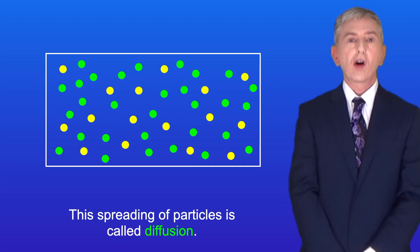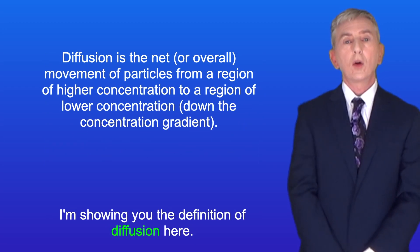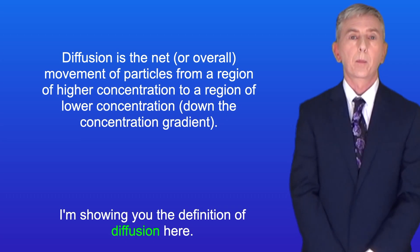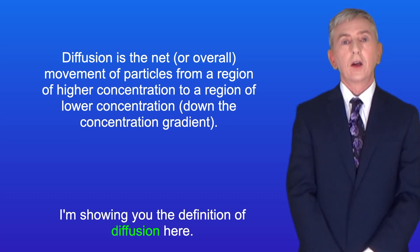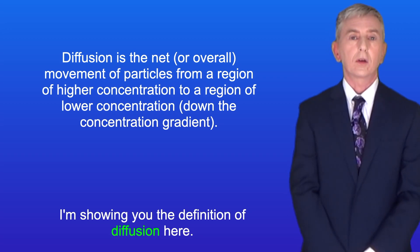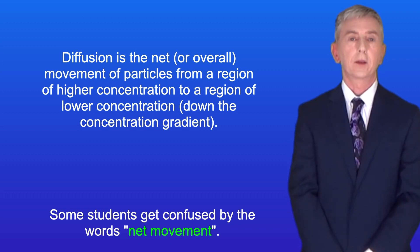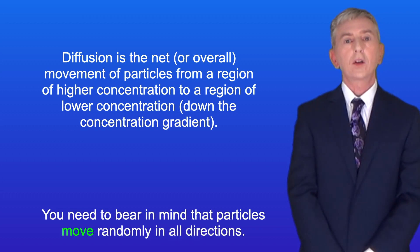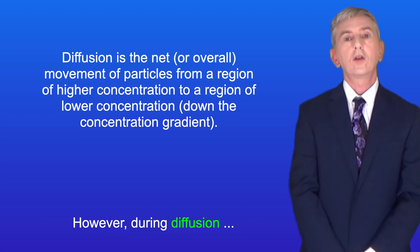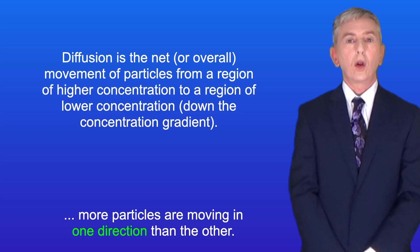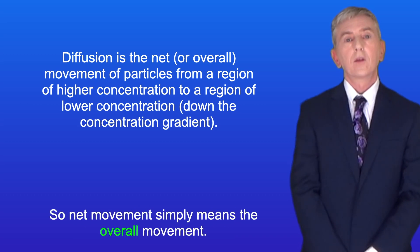Now this spreading of particles is called diffusion. I'm showing you the definition of diffusion here. Diffusion is the net or overall movement of particles from a region of higher concentration to a region of lower concentration. Now some students get confused by the words net movement. You need to bear in mind that particles move randomly in all directions. However, during diffusion, more particles are moving in one direction than the other. So net movement simply means the overall movement.